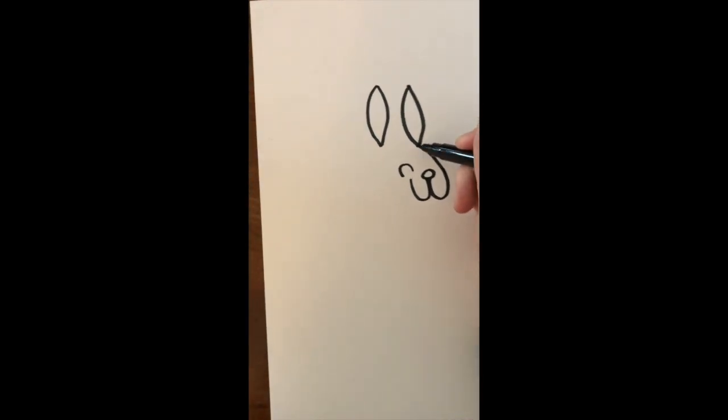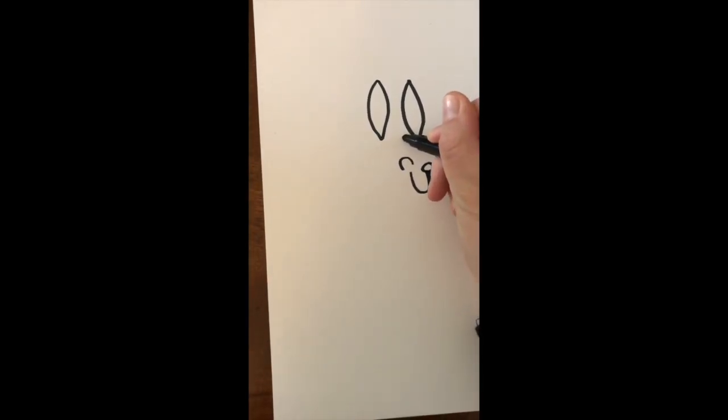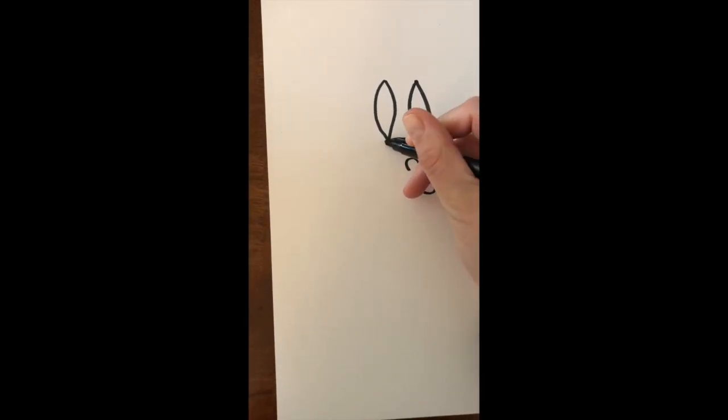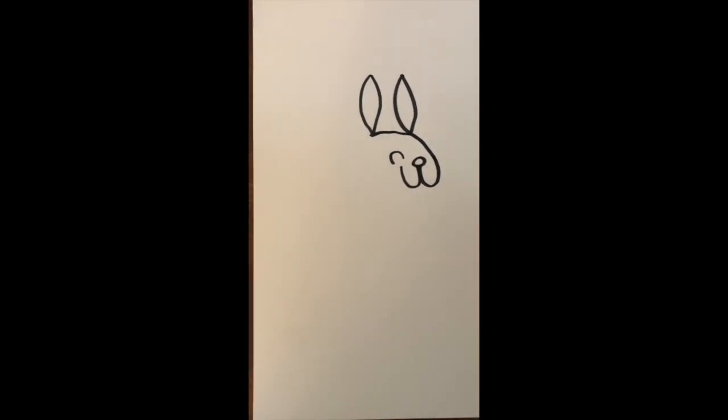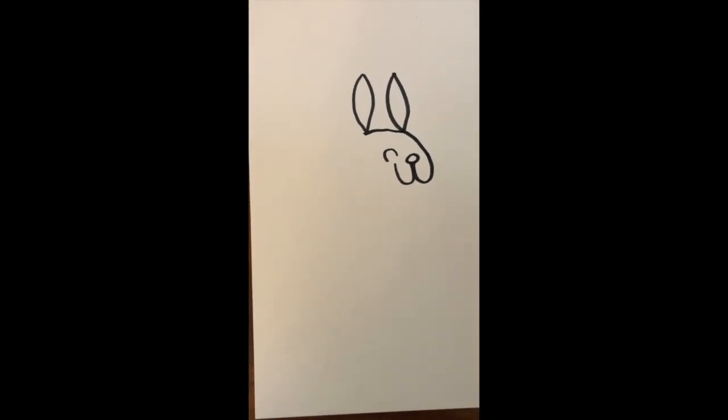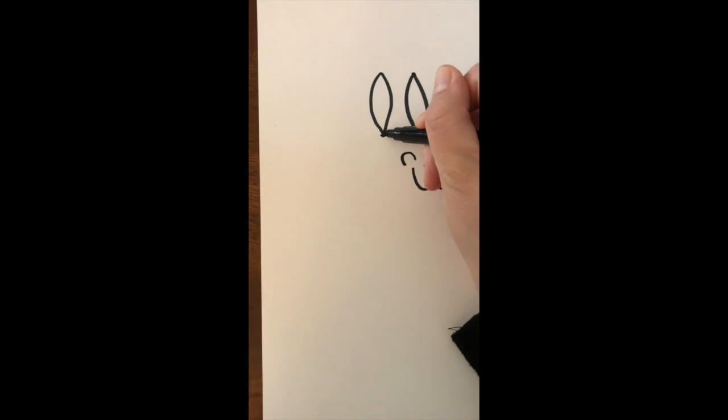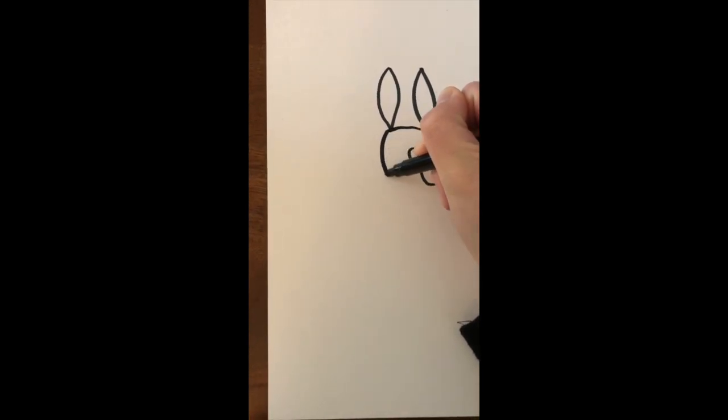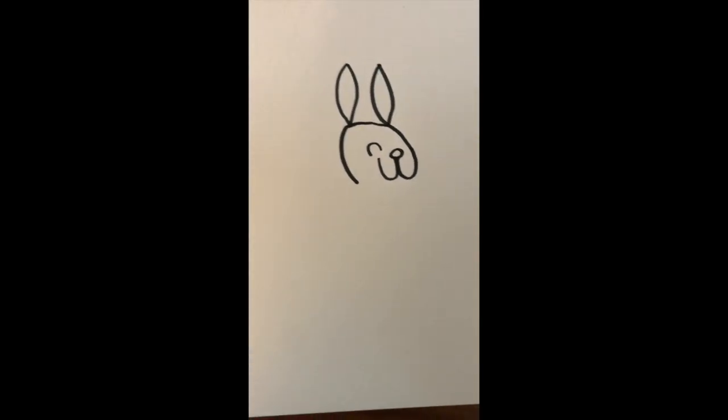First, I'm going to do that ear, and I'm going to take my line over to the other ear. That's going to make the head of my bunny. Once I'm there, I'm going to curve it back around to round my bunny's head off.